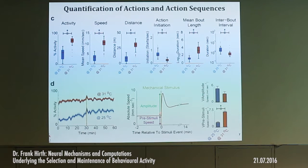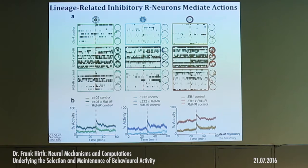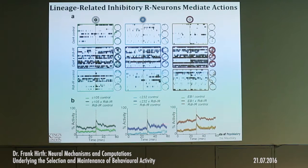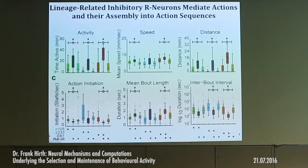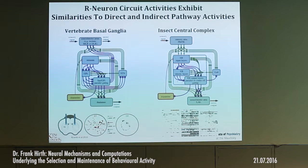We can also reduce the mechanical stimulus and measure response. This readout shows the different layers — outer, middle, inner ring. If we inactivate the GABA-A receptor, you can clearly see that all of a sudden activity is disinhibited. However, arousal or stress thresholds are not affected, as you can see in the stimulus response. This tells us that these ring neurons are involved in actions and their assembly into action sequences — specifically in how a bout of activity, its duration, its onset, and its stop are coordinated. This resembles, at least at the conceptual level, the direct and indirect pathway activities, because this is exactly what the basal ganglia do.